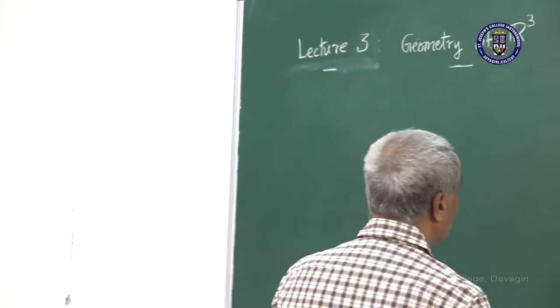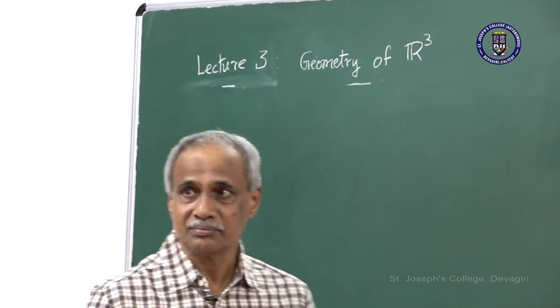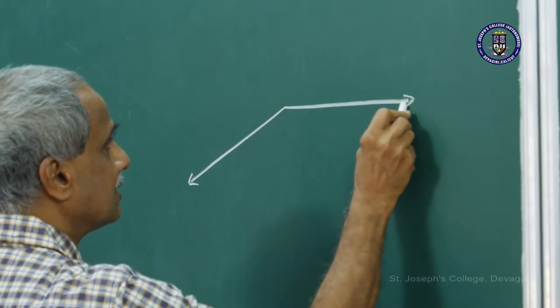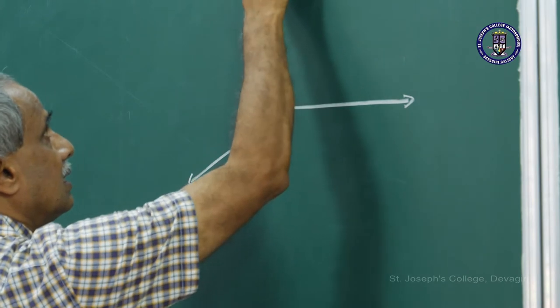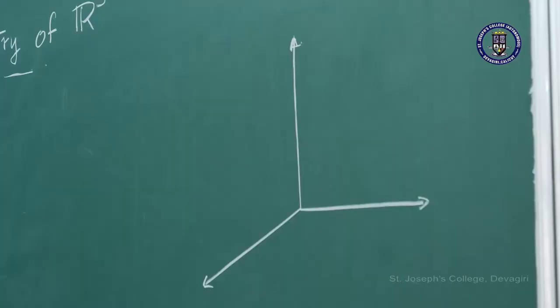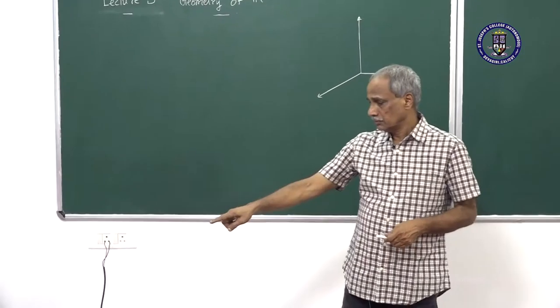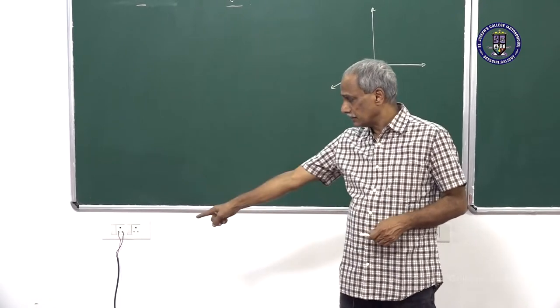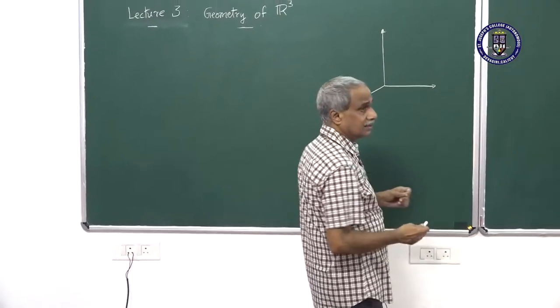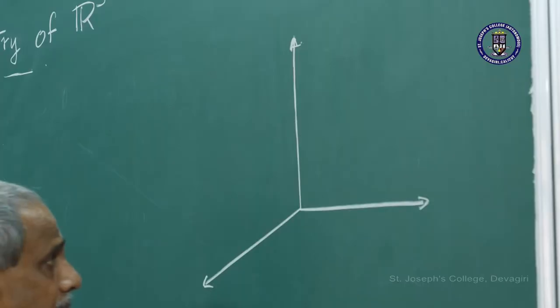Let me draw a coordinate system suited for R3. You have the usual conventional x-axis, y-axis and z-axis. Although we are drawing it in a plane, we are trying to give a three-dimensional view of it and you will have to do a little bit of imagination. A model of that is: if you look at the corner of a room, one is the x-axis, the other one is the y-axis, and the vertical one is the z-axis.